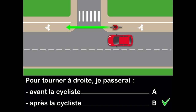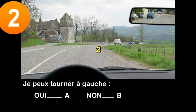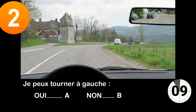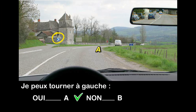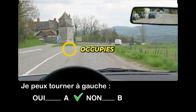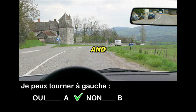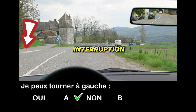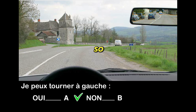Question two: can I turn left? Yes (A) or no (B)? The blue beacon that marks a turn does not prohibit turning left. The give-way line occupies half the width of the street, and the continuous line has an interruption that allows passage. So I can turn left.